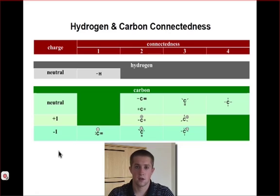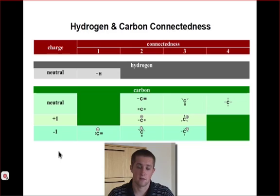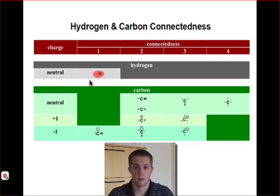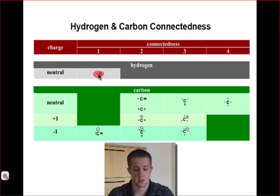The best way to understand how this table is organized is to take a look at a few examples. If we look at the hydrogen atom — if a hydrogen is bonded to any other atom, we know that due to its limited valence shell, it can only have one single bond. Therefore, its maximum connectedness is one, and we can see the example here.